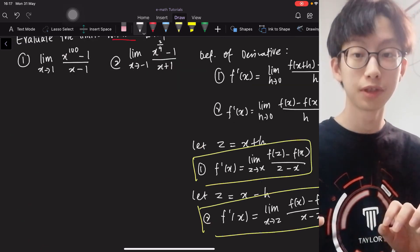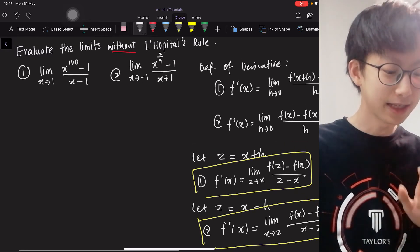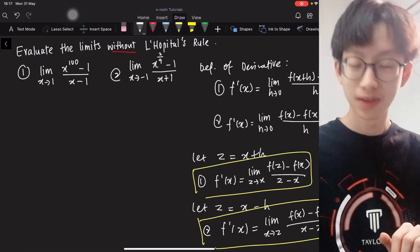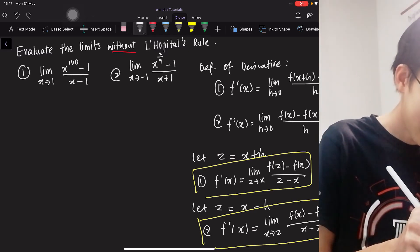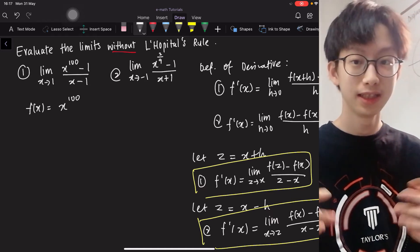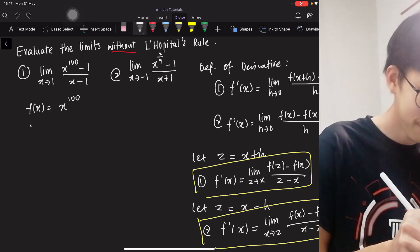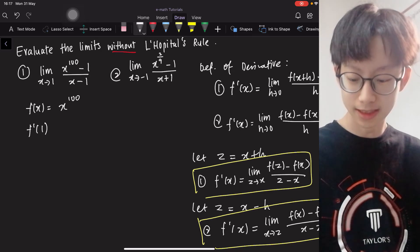So these are the two alternative formulas for the definition of derivative. We will now use these two alternative formulas to evaluate our limits today. So as you can see for number one, it is actually the derivative of the function f(x) equals to x to the 100, isn't it? Just that we are evaluating f'(1), at 1.